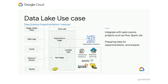The second use case is data science experimentation. It follows a similar model, but the curated data now has to be accessible to exploratory tools — notebooks, machine learning tools, and Spark. All the data in the curated zone has to be accessible to all these different open source tools, and more tools keep getting added year over year.